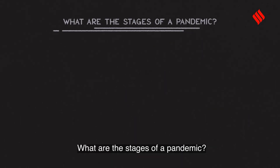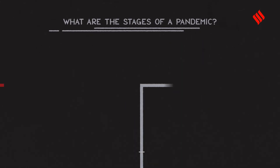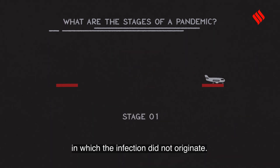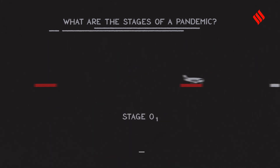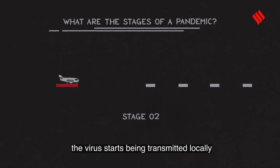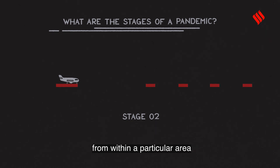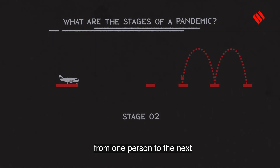What are the stages of a pandemic? In stage 1, cases are imported into a country in which the infection did not originate. During stage 2, the virus starts being transmitted locally, where the source of the infection is from within a particular area and the trajectory the virus has taken from one person to the next is clearly established.